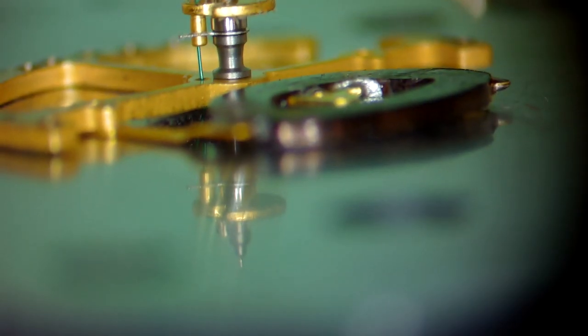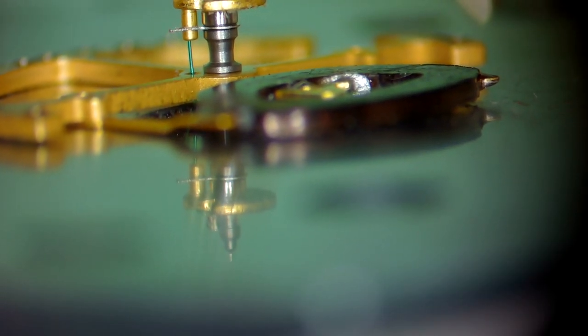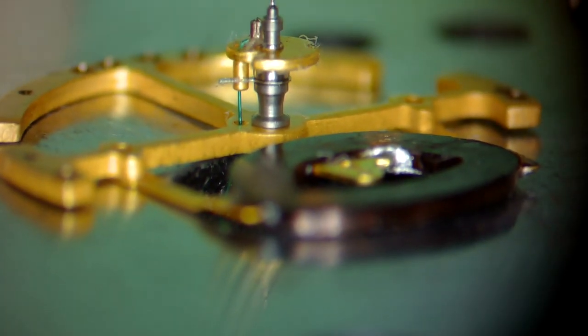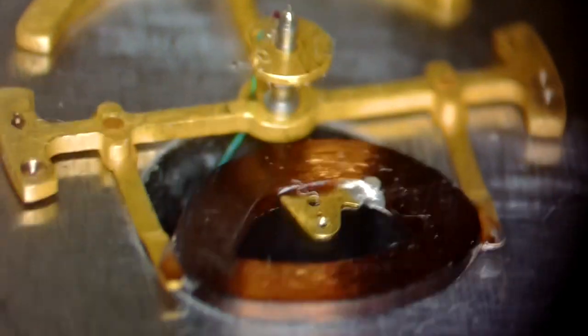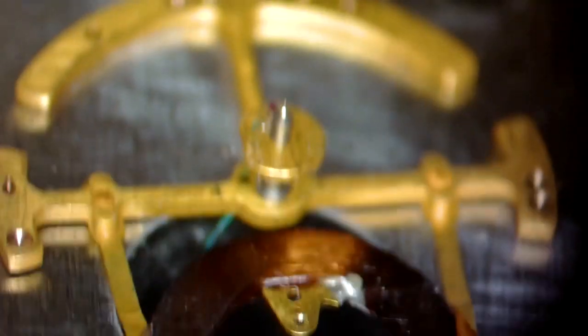You'll notice that that balance staff is a very unique balance staff with an upper collar and a lower collar finger block, which prevents the watch from overbanking. A lot going on there.